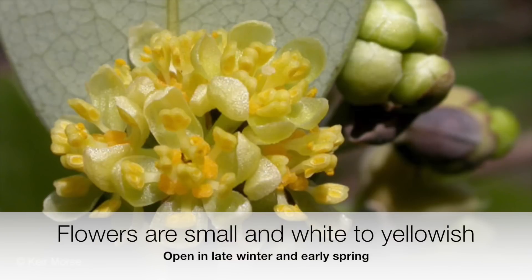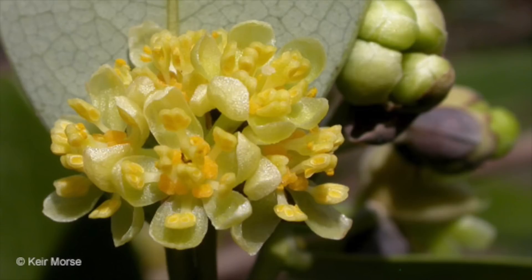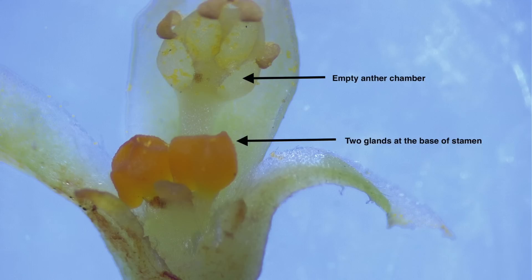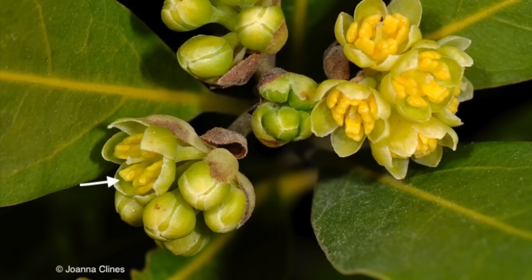Inside each flower, we find that this plant has a special way of storing and releasing pollen. On each stamen, the male part of the flower, there are four chambers that hold pollen. When the flaps open, pollen is released. Here we see a close-up view of one stamen where the flaps have opened and the pollen has been released. We can also see two golden glands that are found at the base of every stamen. Now zooming back out, we can see the stamens and the four pollen chambers.